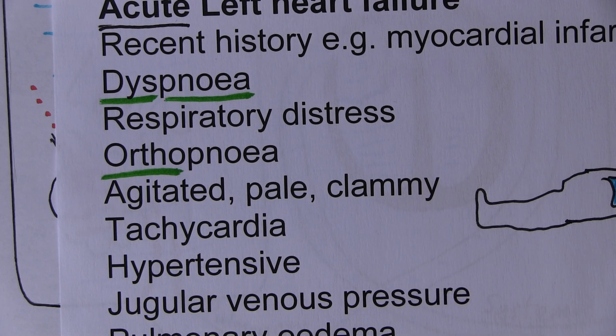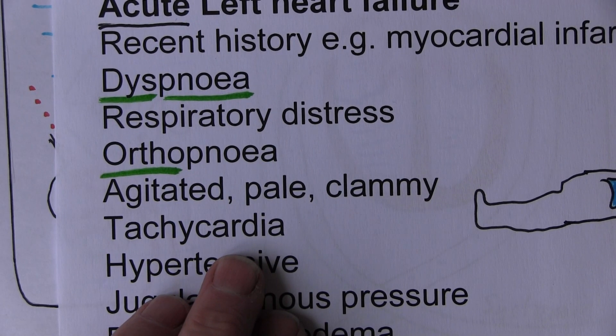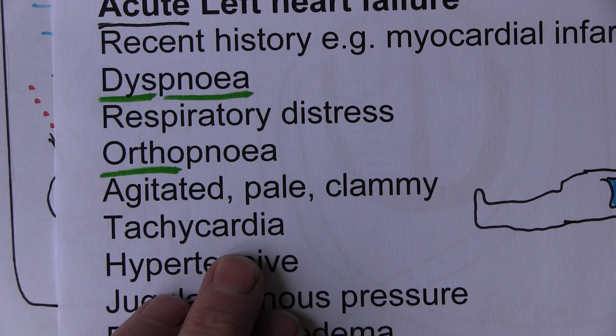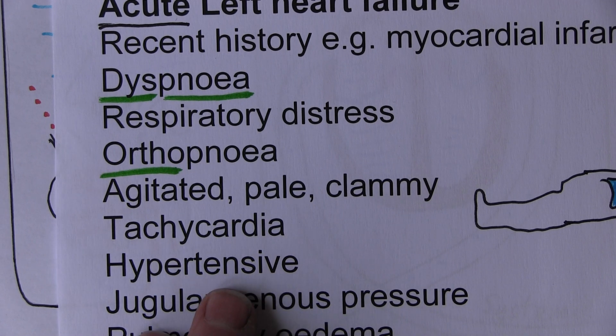Tachycardia is also a feature of the sympathetic attempted compensation. Occasionally there can be an inappropriate bradycardia which is a very poor prognostic feature.